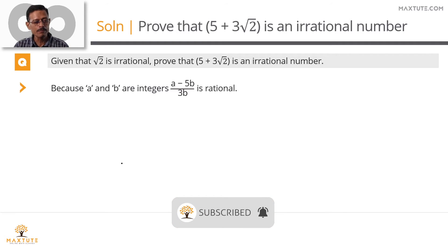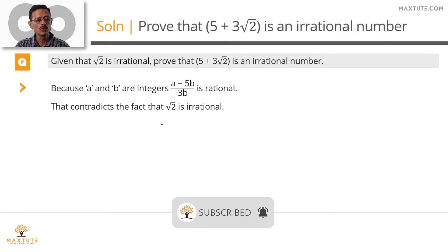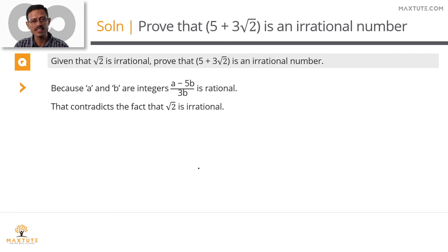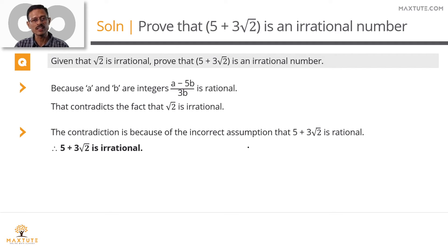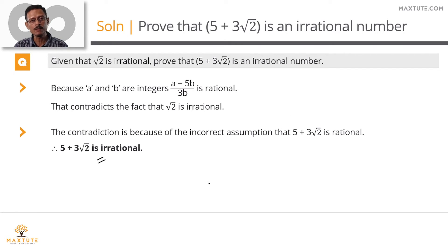Because a and b are integers, (a − 5b) / 3b is rational, pointing to the fact that root 2 is rational. This contradicts the given information that root 2 is irrational. This contradiction is because of our incorrect assumption that 5 plus 3 root 2 is rational. Therefore, we have proved that 5 plus 3 root 2 is an irrational number. These are the steps you need to write to get these two marks.